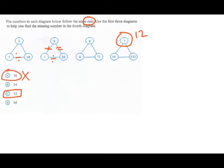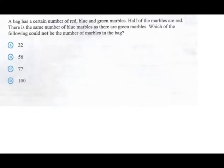Now let's look at another question. A bag has a certain number of red, blue and green marbles. Half of the marbles are red. There is the same number of blue marbles as there are green marbles. Which of the following could not be the number of marbles in the bag? So again guys, we're gonna underline that part that makes sense to us. Could not be, so obviously the others can be.